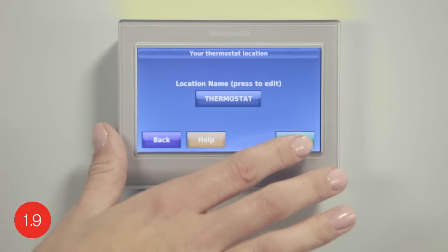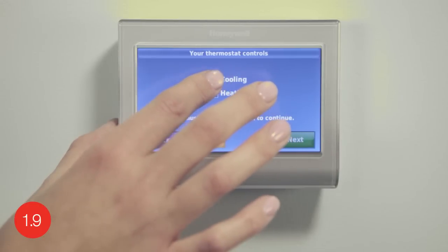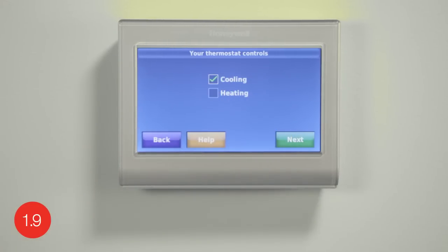Continue by selecting next. It is especially important that you set up the correct system type so your heating and cooling system functions properly. To get started, choose if the thermostat is used to control heating, cooling, or both and select next to continue.